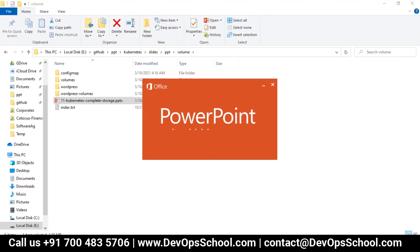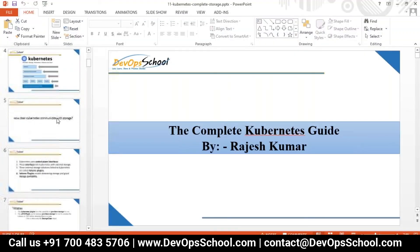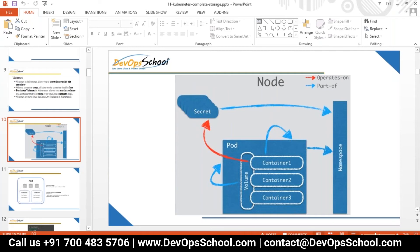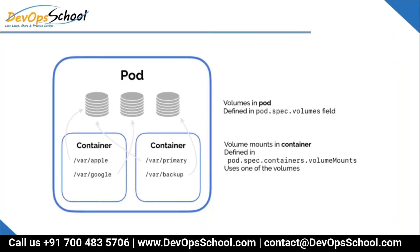Volumes can be attached to a pod. Look at this image carefully. Inside a pod you have three containers, and inside the pod you also have volumes. Volume is a resource, just like a container is a resource. The volume is part of the pod, and the container is also part of the pod. When a volume is attached to the pod, it is shared among all the containers.